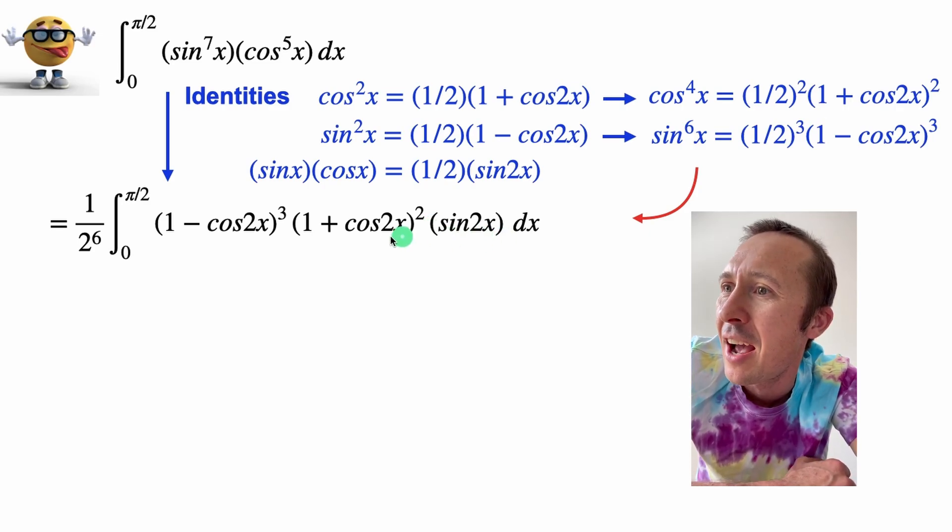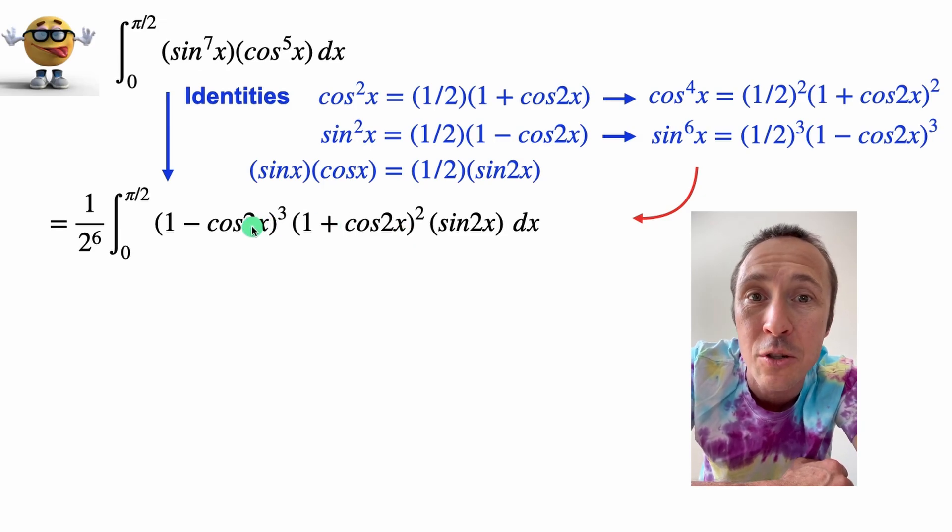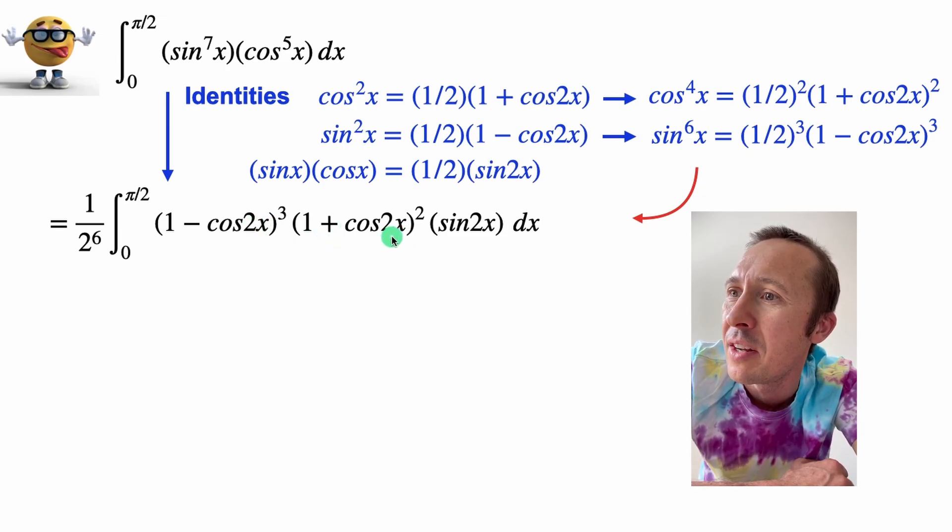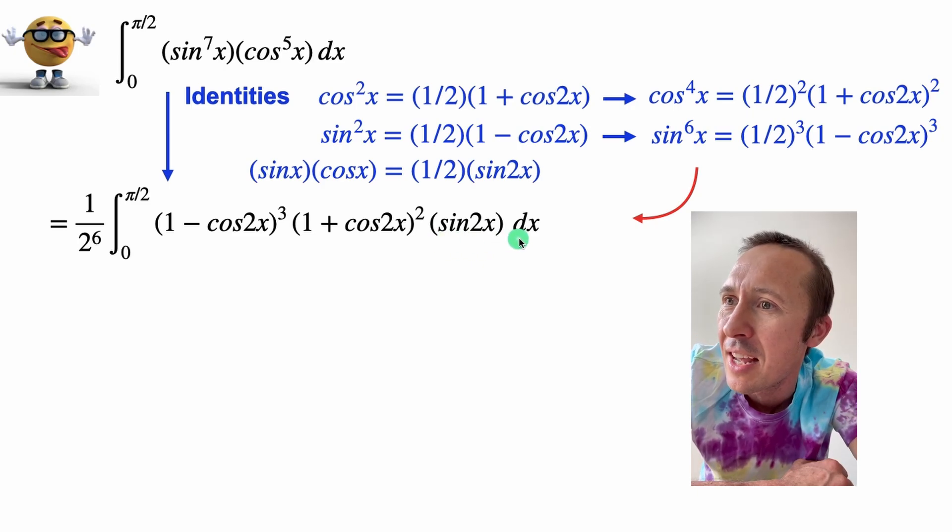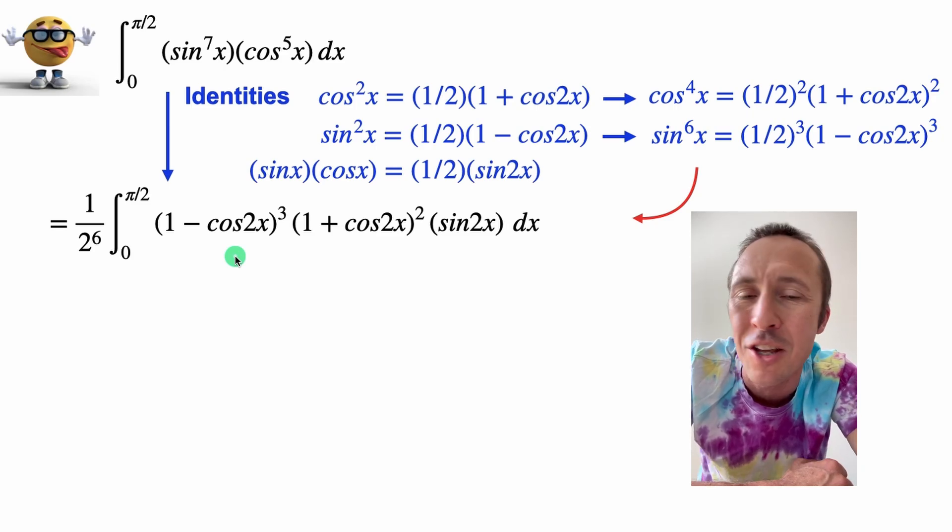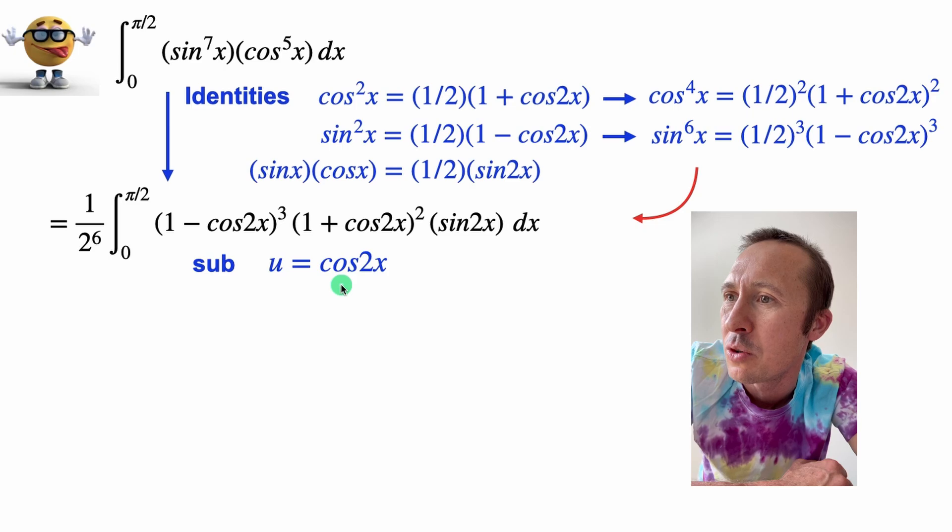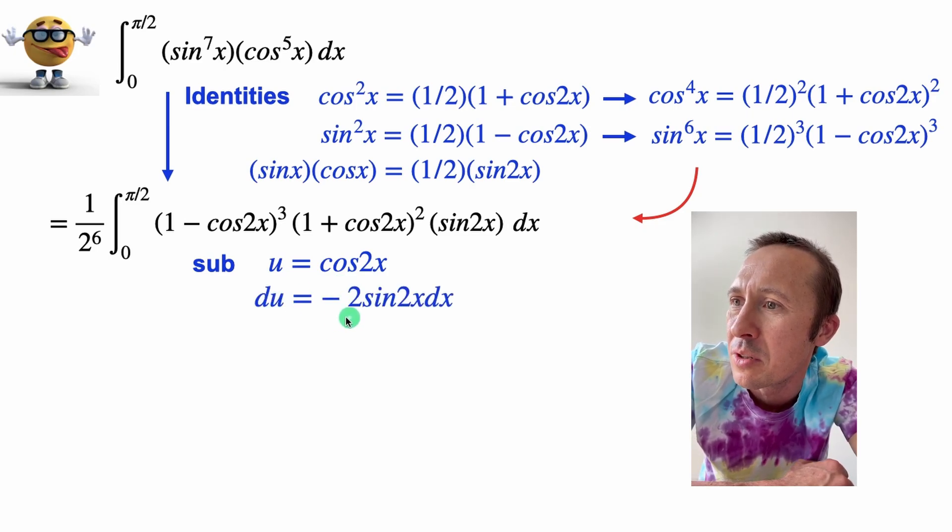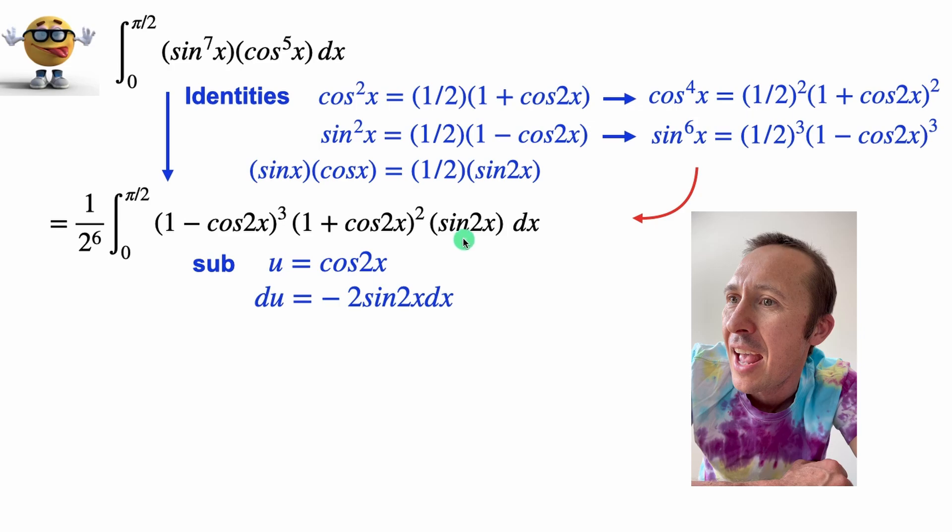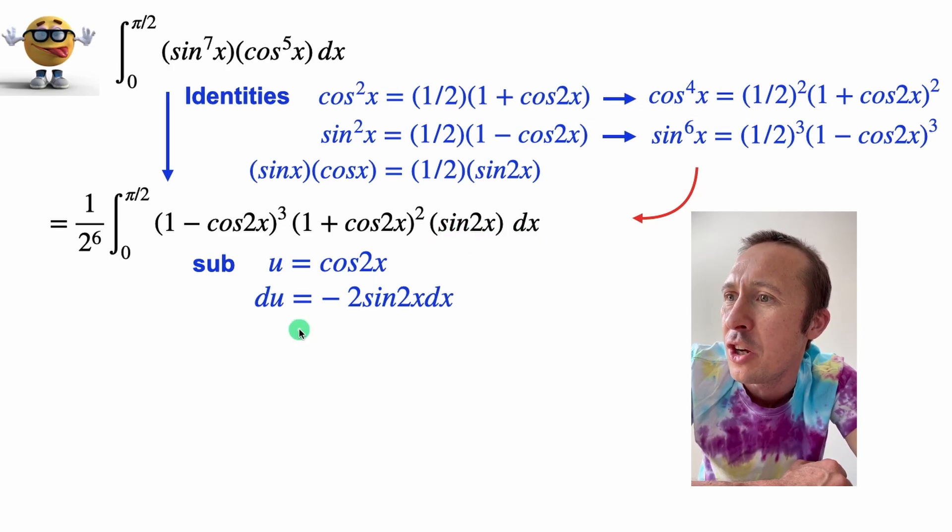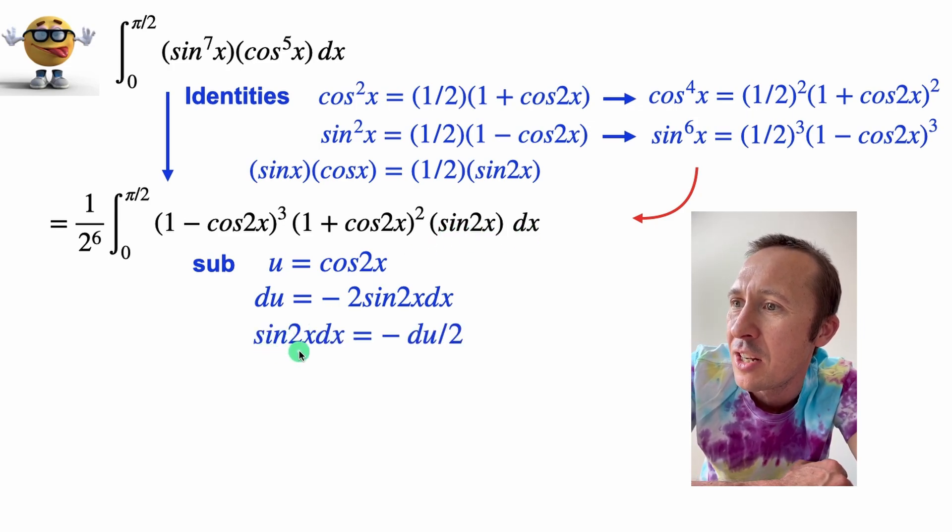Now at this point, I wrote everything in terms of cos 2x, but that's okay, because the derivative of cos 2x is sine 2x. It's like a negative with some change, but this is essentially the derivative of this part right here. So I did a u substitution at this point, where u equals cos 2x, so the derivative du equals negative two sine 2x dx.